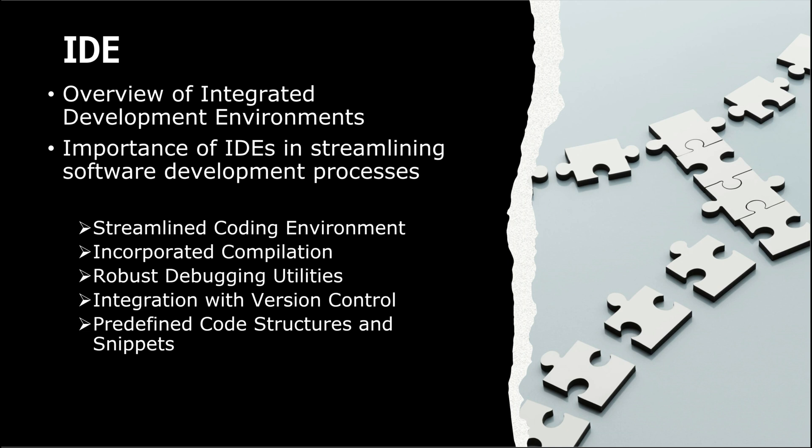The last feature is predefined code structures and snippets. For example, instead of typing out 'System.out.println', you can just type 'sout' and it auto-completes the print line. Similarly, 'psvm' expands to 'public static void main'. You can also type 'try' and press Control+Enter to auto-generate a try-catch block. These built-in snippets save a lot of time — something you can't find in a simple notepad.